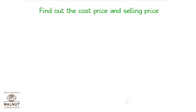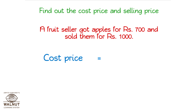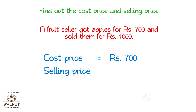Find out the cost price and selling price. A fruit seller got apples for Rs. 700 and sold them for Rs. 1000. The cost price is Rs. 700. The selling price is Rs. 1000.